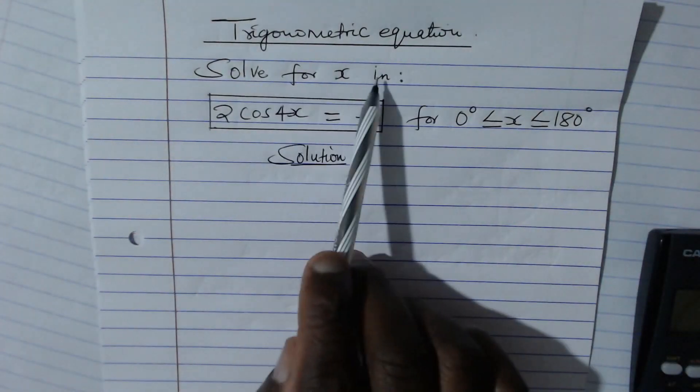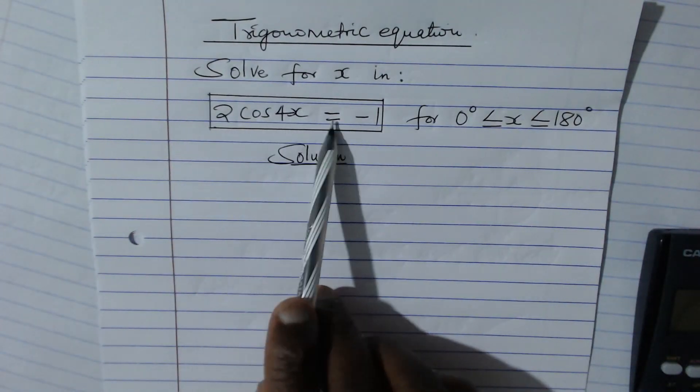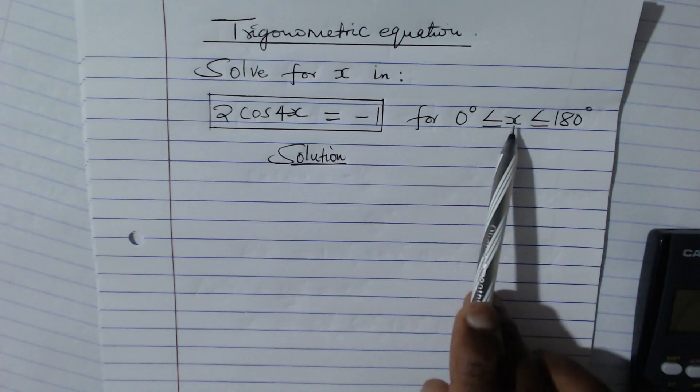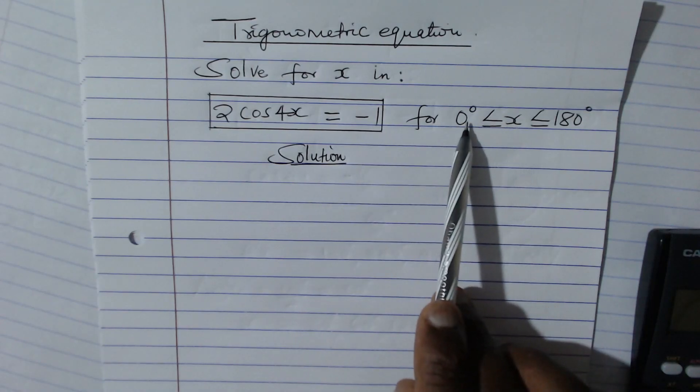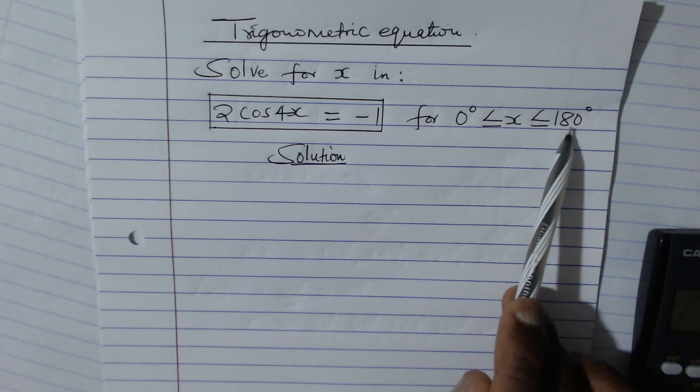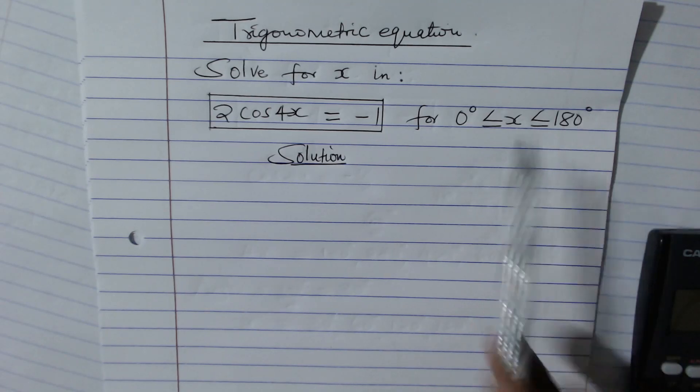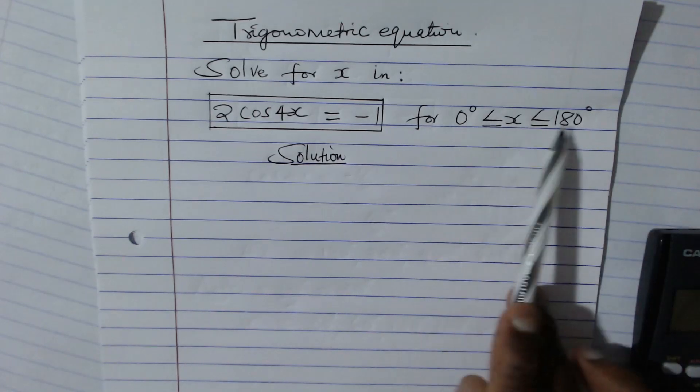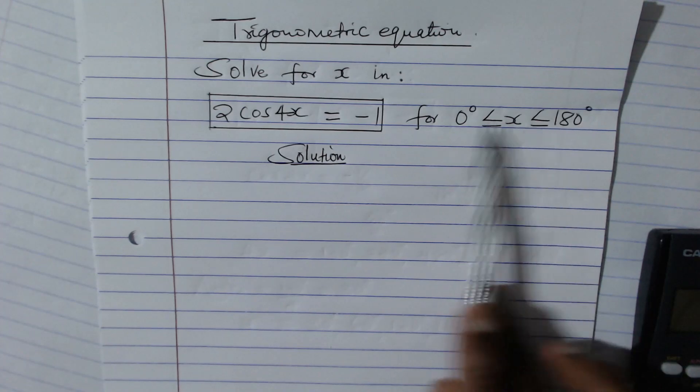Trigonometric equation. Solve for x in 2cos(4x) = -1 for 0° ≤ x ≤ 180°. So the range is simply from 0 degrees to 180. Your answers are supposed to be between there.